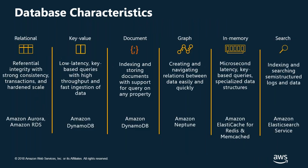Looking at each database type in more detail: on the relational side you get strong referential integrity with strong consistency, transactions, and hardened scale — tried and tested technology. AWS has Amazon Aurora and Amazon RDS for this. On the key-value side, you want really low latency — a key that pulls back data with very high throughput — and Amazon DynamoDB is a great solution for that.